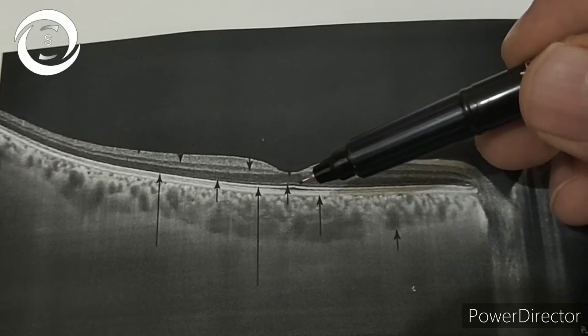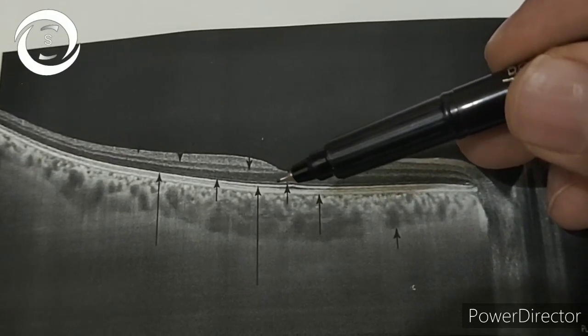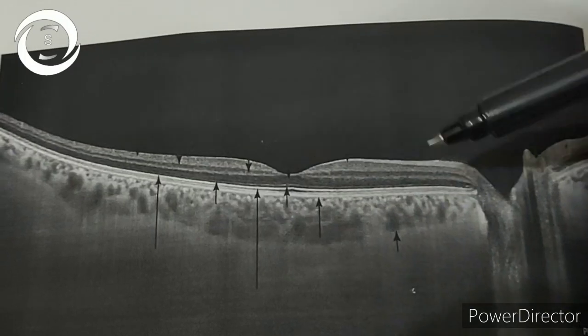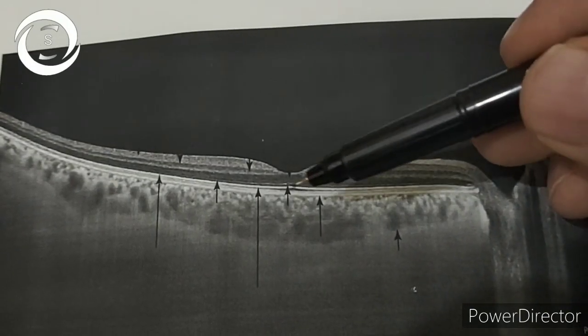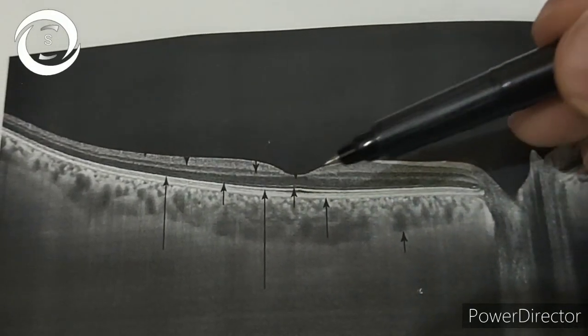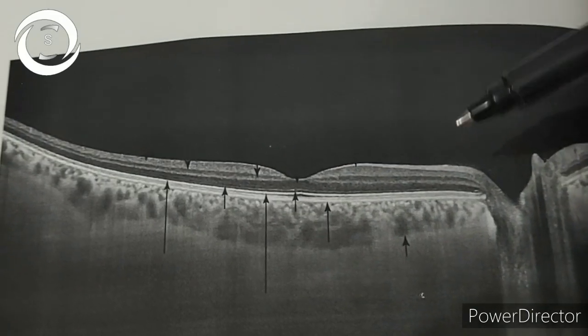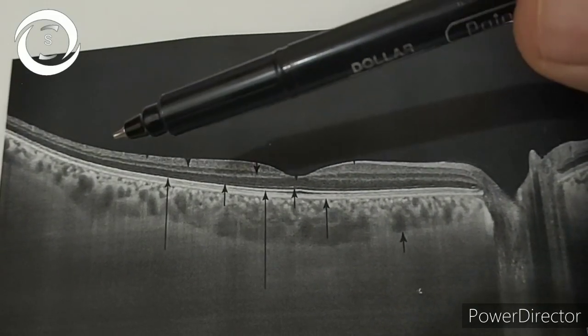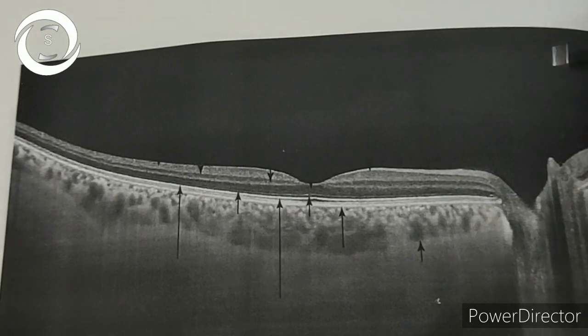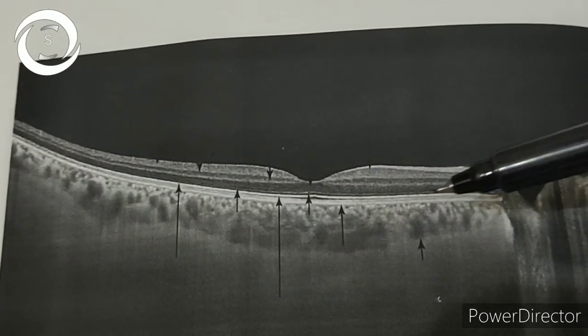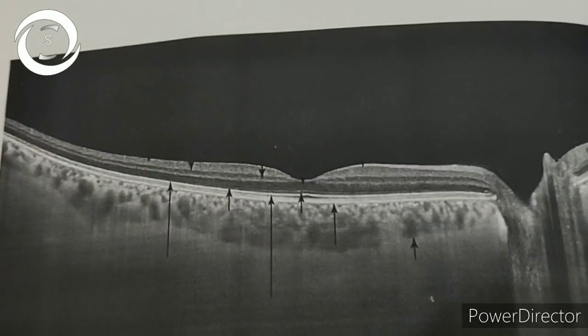At the fovea, these above-mentioned layers are absent and the outer nuclear layer is only present as a hypo-reflective layer, but thickest here as compared to the periphery. Beneath it is a very thin hyper-reflective line.